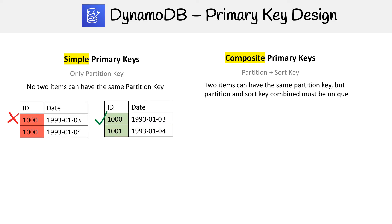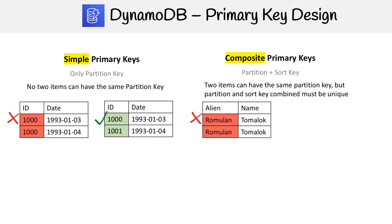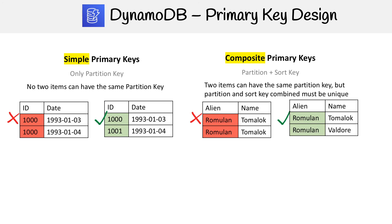On the composite key side, two items can have the same partition key, but the partition and sort key combined must be unique. So here, let's say alien is the partition and name is the sort — they're both the same, that's not going to work out. But here the partition key is the same and the sort key is different, and that's all right. So that's going to work out great.